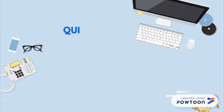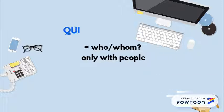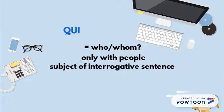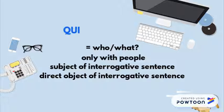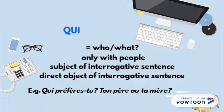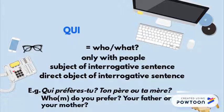Qui means 'who' or 'whom.' It is used only with people. It is either the subject of the interrogative sentence — for instance, qui est là ? — Who is there? — or the direct object of the interrogative sentence — for instance, qui préfères-tu ? Ton père ou ta mère ? — Whom do you prefer? Your father or your mother?